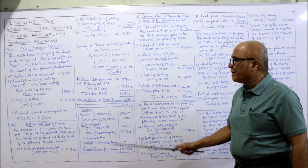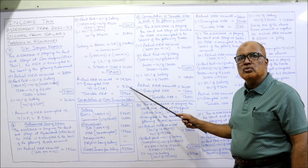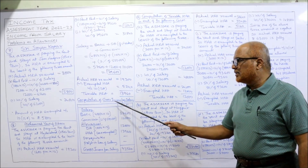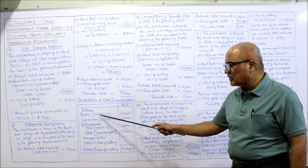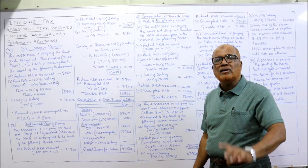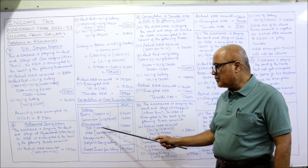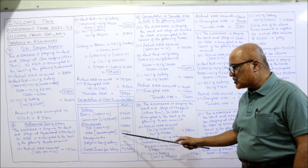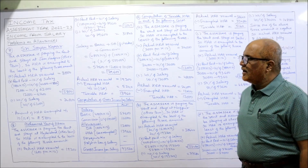Now we find the taxable HRA. Actual HRA received Rs 19,200 minus exempted HRA Rs 5,240 = taxable HRA Rs 13,960. Now calculating gross income from salary: basic Rs 4,800 × 12 = Rs 57,600; commission 2% of Rs 5,00,000 = Rs 10,000; DA Rs 1,000 × 12 = Rs 12,000; unexempted (taxable) HRA = Rs 13,960. No perquisites, no profit in lieu of salary. Total gross income from salary = Rs 93,560. End of Problem 8.